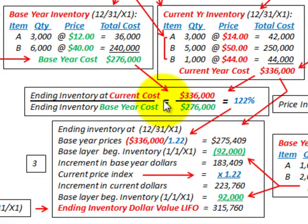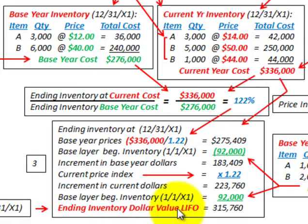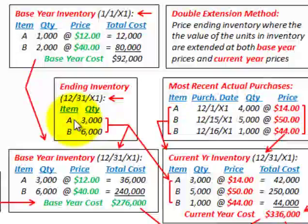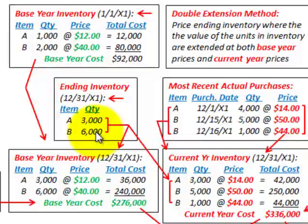Based on our current costs and our base year cost of this ending inventory, we will develop our price index. Once we have that price index, we can apply it to our inventory amounts to determine the ending inventory dollar value LIFO amount. So first, for our base year inventory cost, we have ending inventory at 12/31/X1: Item A with a quantity of 3,000 and Item B with a quantity of 6,000.